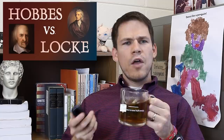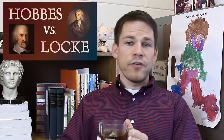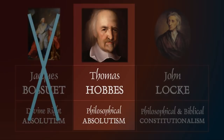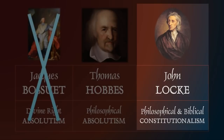So Hobbes and Locke — you've probably already heard about the divine right of kings. If you haven't, check out my video lecture on that. You've likely been exposed to Jacques Bossuet, however you say that — it's French — and he was a proponent of divine right absolutism. This isn't going to be about Bossuet. Both Hobbes and Locke reject the idea of divine right. Hobbes is going to advocate for absolutism like Bossuet does, but it's going to be a philosophical absolutism, where John Locke is going to advocate for constitutional government — a limited government — and he is going to use both philosophical and biblical justifications for his argument for constitutionalism.